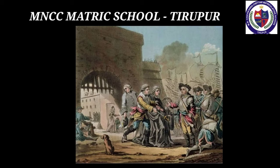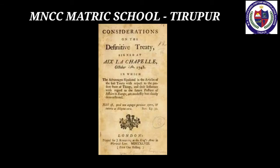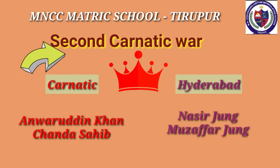The French defeated the Indian army under Marfus Khan. The war ended with the Treaty of Aix-la-Chapelle, which brought the Austrian War of Succession to an end. Under its terms, Madras was returned to the English, and the French in turn got their territories in North America.